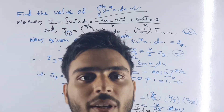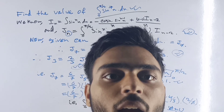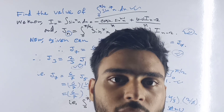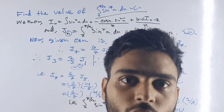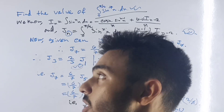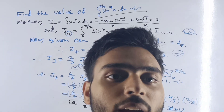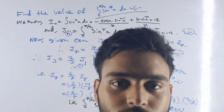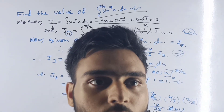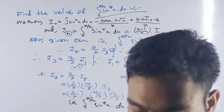That's an interesting formula of successive reduction. We found the value of integration from 0 to π/2 of sin^7(x) dx equals 16/35.